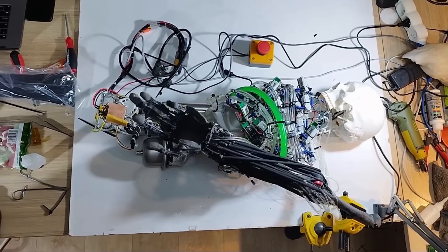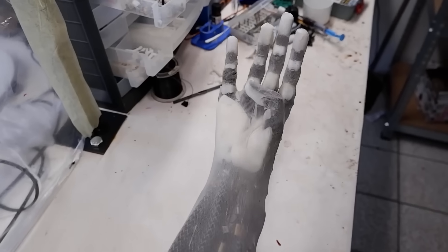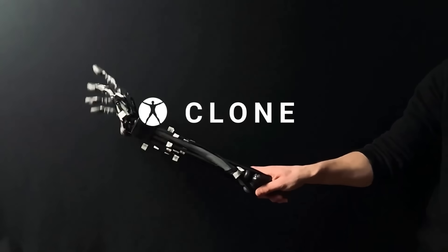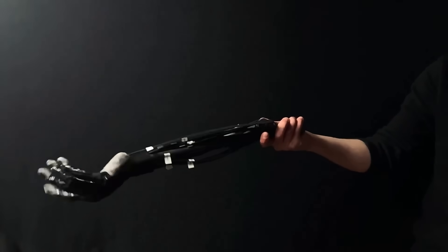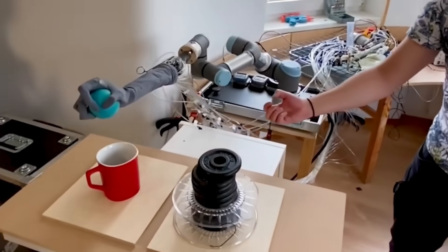But before that, we have to talk about the first synthetic AI human with real muscles that blur the lines between us and machines. Clone Robotics is working on a project that could change how we view robots and close the gap between humans and machines.